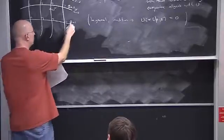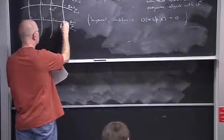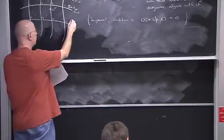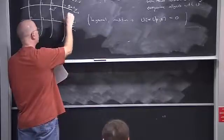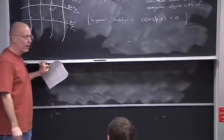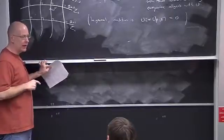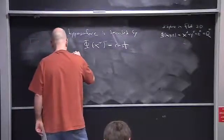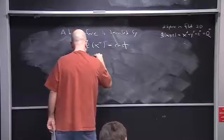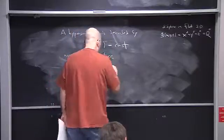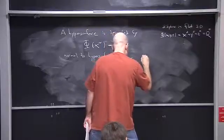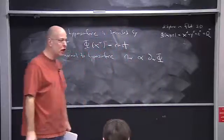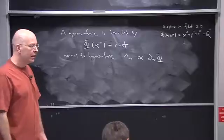I'm saying two things: first, because the function doesn't change as I move within the surface, the gradient vector cannot point within the surface. Second, because the function changes only as I go away from the surface, the gradient vector has to point in the normal direction. So the normal to the hypersurface is proportional to the gradient of phi, because the function only changes as you go away from the hypersurface in the normal direction.